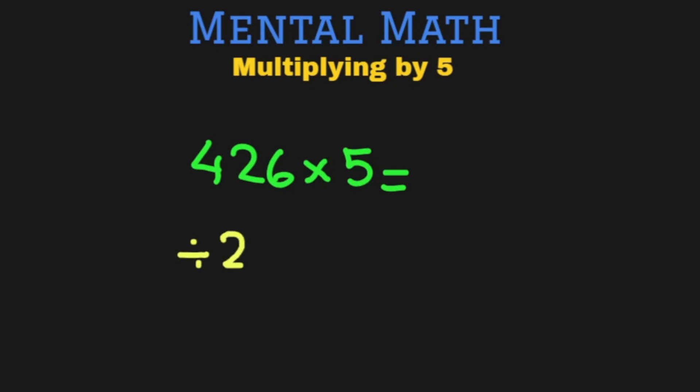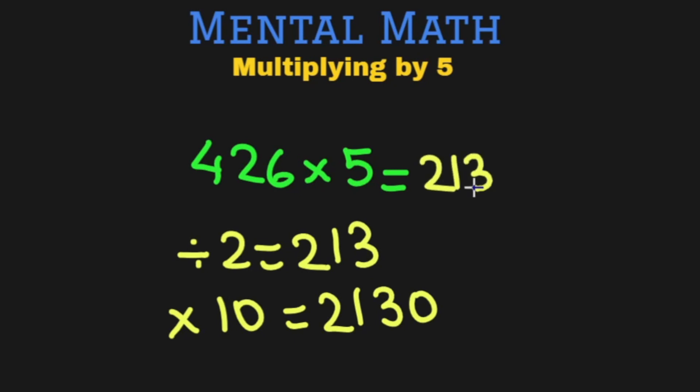That is divide by 2. Very simple. Just half the number. 213. Multiply by 10 gives us 2130. So we just add a 0 to this answer. So this is our final answer.